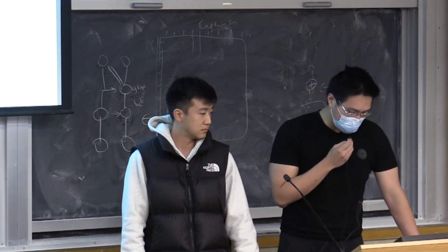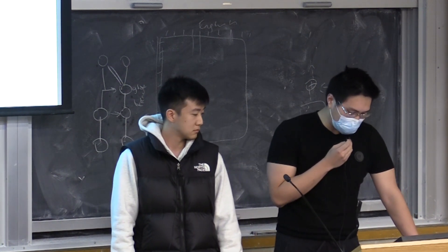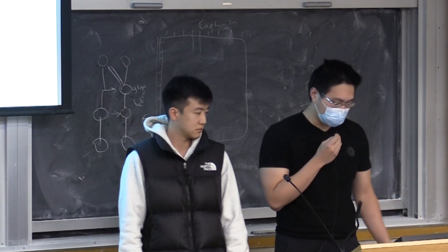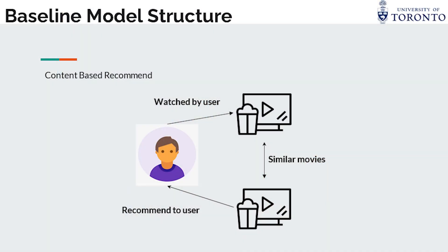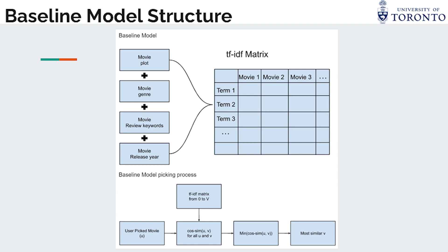Our baseline model used a traditional content-based recommender system to surface similar movies based on user inputs. We use TF-IDF scores to vectorize our movie information, such as plots, genres, and et cetera, and form the matrix shown on the right.